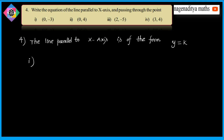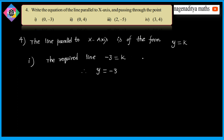Therefore, for the first question, the point is (0, -3). The x-value is 0 and the y-value is -3. Therefore, the required line is y is equal to -3. Since y is equal to k, we have k is equal to -3. So we substitute the k-value and the required line is y is equal to -3.